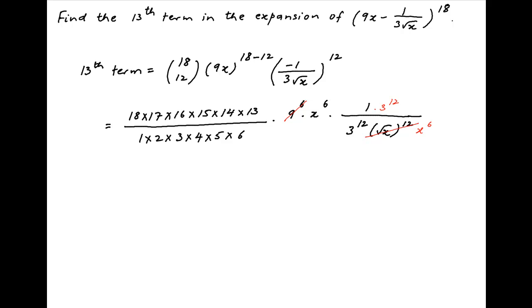3 raised to the power 12 cancels across the numerator and the denominator. The constant terms also simplify and we are left with 17 times 14 times 13 times 6, which is equal to 18,564, which is the required answer.